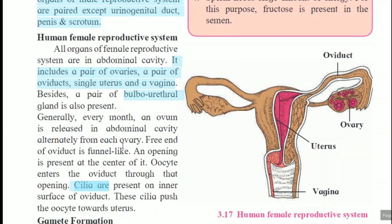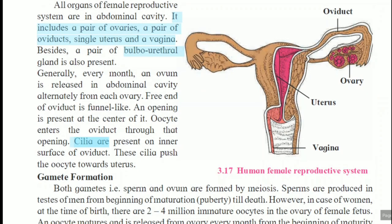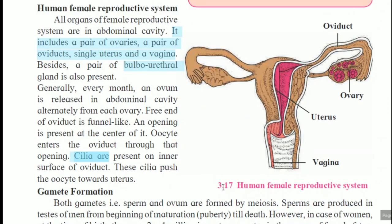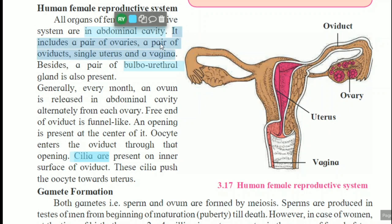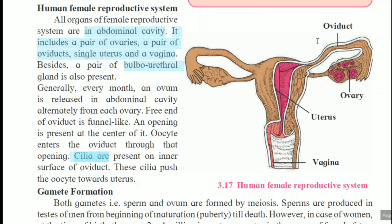Next is the structure and function of the human female reproductive system. Diagram 3.17 indicates the female reproductive system. This system is present in the abdominal cavity. It includes a pair of ovaries, a pair of oviducts, a single uterus, and a vagina. The oviduct is a tube-like structure also called the fallopian tube, followed by the uterus and then the vagina.